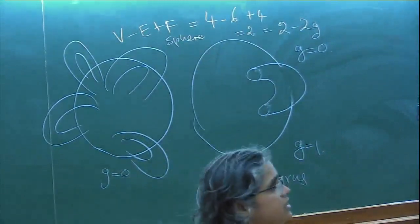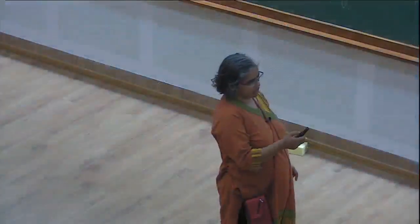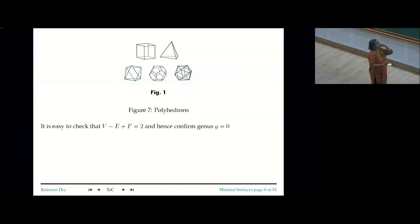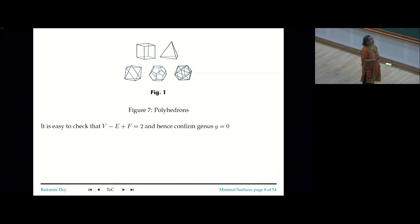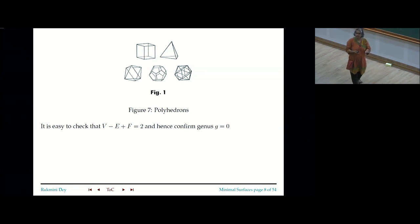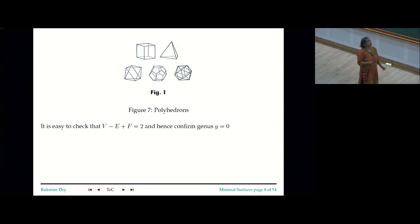There are many other polygonizations — for example, the cube. The cube is topologically equivalent to the sphere. If you calculate V − E + F for the cube, you will again get genus 0. Similarly, the tetrahedron, octahedron, dodecahedron, icosahedron — these are the Platonic solids. They are all homeomorphic to the sphere, and if you calculate V − E + F for all of them, you will end up getting G = 0. If you have a Rubik's cube, you can do that at home.